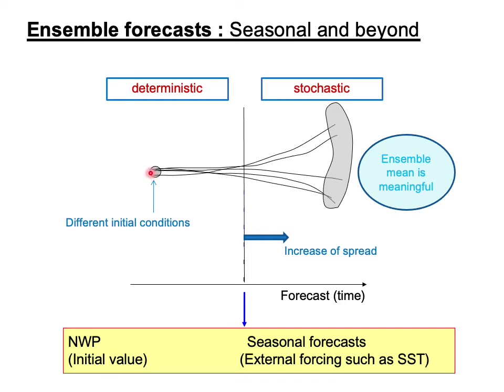Here, the deterministic forecast stands for a single model output, while ensemble forecast uses multiple runs with slightly different initial conditions. With accumulated error, the members of the ensemble forecast diverge — that is, the spread among ensemble members increases. Thus, a snapshot after a certain period is not meaningful, and the average of all ensemble members becomes useful.